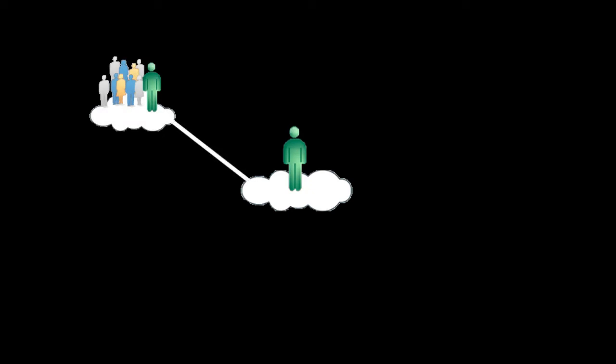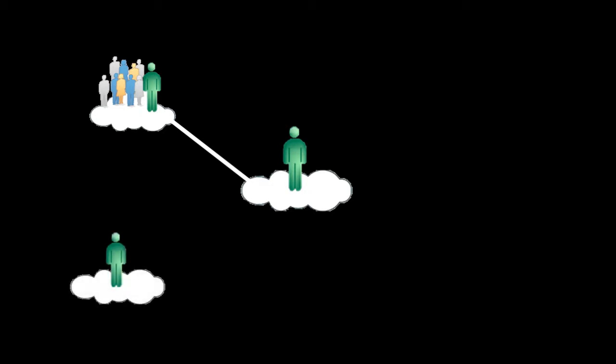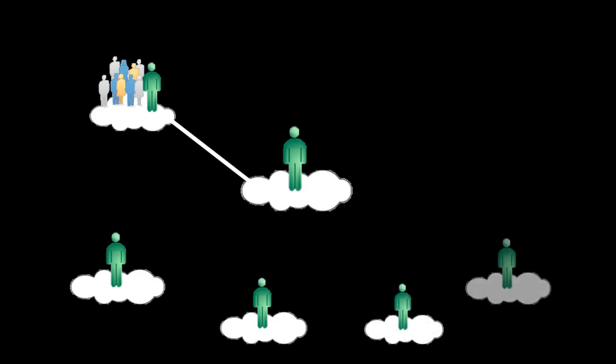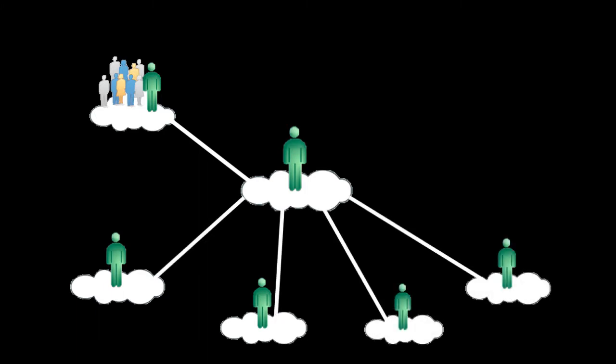Your clouds are networked together so you can easily share info. From your personal cloud, you can invite individuals with whom you regularly interact. Once they join your cloud network, you can have spam-free communications, coordinate your calendars, and share files.